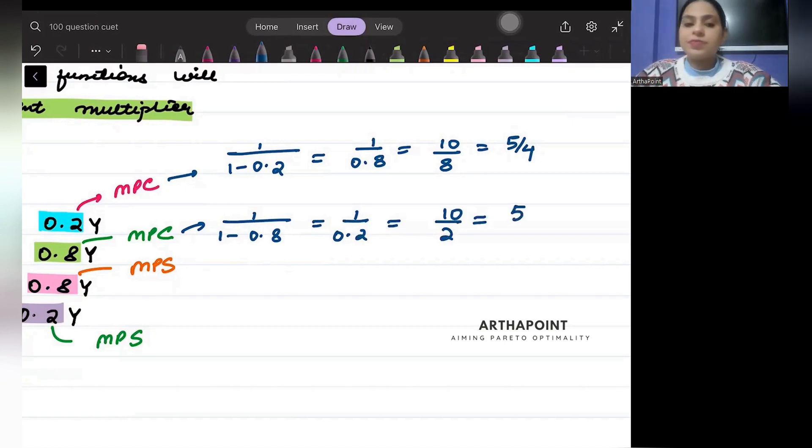What will be multiplier from here? 1/0.8. This is MPS directly, so 10/8, that means 5/4.